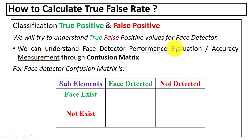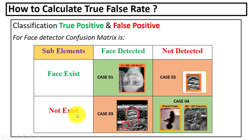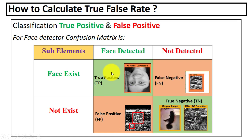Now we can understand face detector performance — that is, its accuracy measurement — through the confusion matrix. This is the confusion matrix we created for the proposed face detector. It has sub-elements: face exists, face does not exist, face detected, and face not detected. Case one: face exists and it is detected. Case two: face exists in the digital image but is not detected. Case three: face does not exist but it detected something else as face. Case four: no face, no detection.